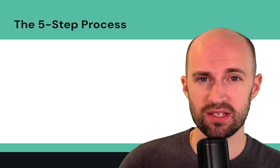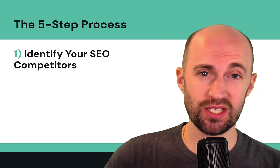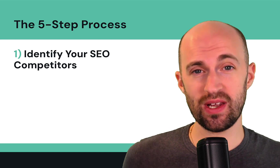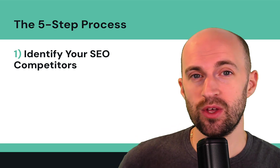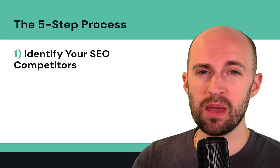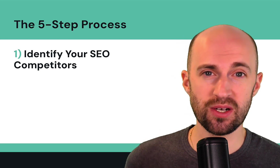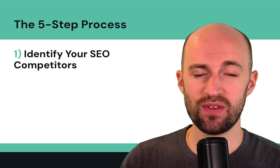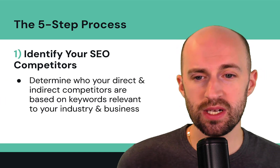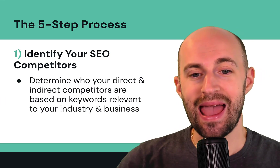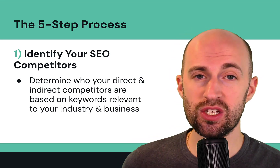Let's dive into the five-step process of competitor research. The first step is to identify your SEO competitors — you want to know the landscape and who you're actually up against. You want to determine who your direct and indirect competitors are based on keywords that are relevant to your industry and business.